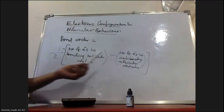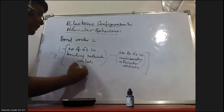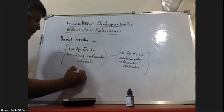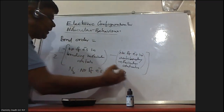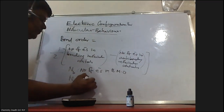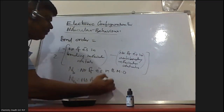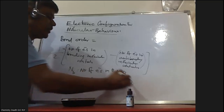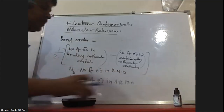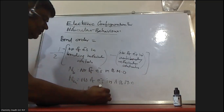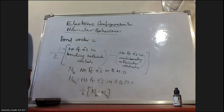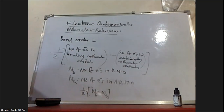For example, if N-b is the number of electrons in bonding molecular orbitals, and N-a is the number of electrons in anti-bonding molecular orbitals, then bond order is given by half of (N-b minus N-a). This is the information we are getting from the electronic configuration of the molecule.